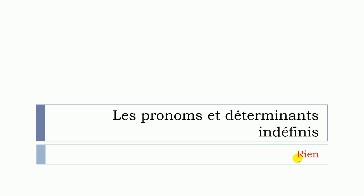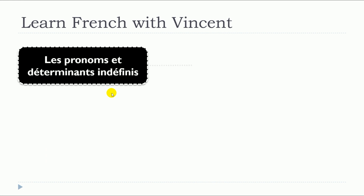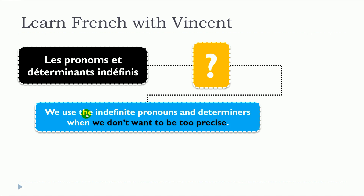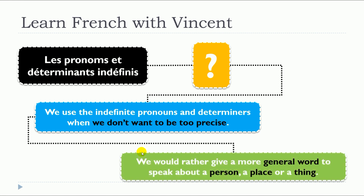In this lesson, we will see together les pronoms et déterminants indéfinis. But more precisely, we will see rien. So the main question is, what are les pronoms et déterminants indéfinis? We use the indefinite pronouns and determinants when we don't want to be too precise — we would rather give a more general word to speak about a person, a place, or a thing.